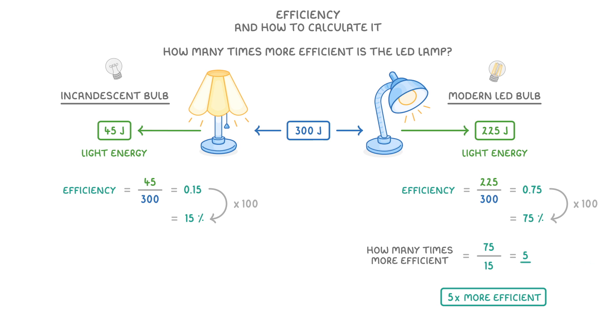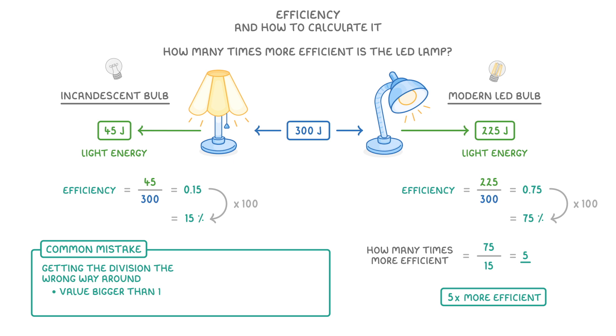When you're calculating the efficiency, one of the common mistakes you need to watch out for is to get the division the wrong way round. If you ever do this, you should be able to notice it though, because you'll get a value bigger than 1 or bigger than 100%. In our example here, you'd get an efficiency rating of 1.33 or 133%, which is impossible, because it implies that you've got more energy out than you put in in the first place.